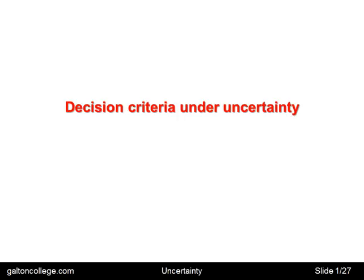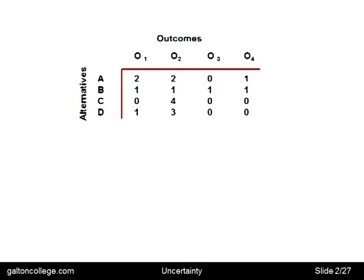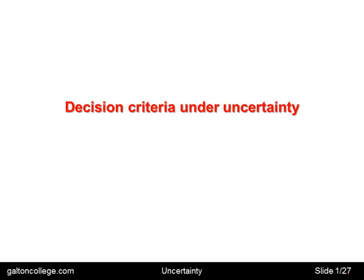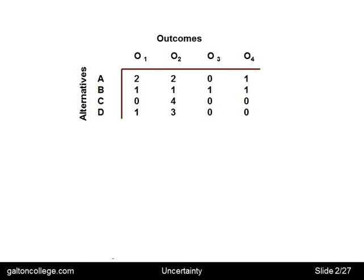We're going to start with a table. I'll put the cursor onto the screen. Here we have outcomes along here — outcome 1, outcome 2, outcome 3, outcome 4. And here we have the alternatives; these are our decisions. We can make decision A, B, C, or D, so we have four decisions and, coincidentally, four outcomes. Each one of these outcomes may be called a state of nature.